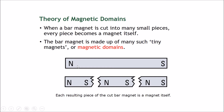Within the bar magnet, there are many microscopic magnets all pointing north to south. So when you break it in two, you're breaking it up into little chunks of the same thing — little magnetic domains pointing north to south. Each resulting piece of the cut bar magnet is therefore a magnet in itself.